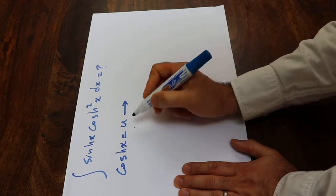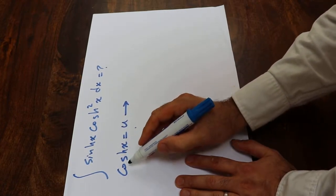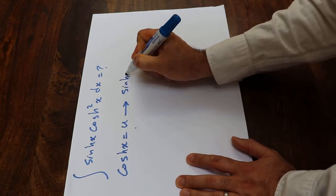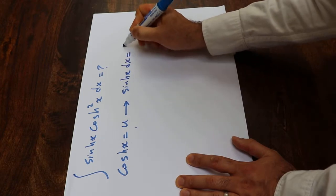and if you take the derivative from each side of this equation, the derivative of hyperbolic cosine x will be equal to hyperbolic sine x dx, which equals du.